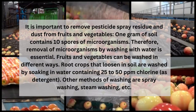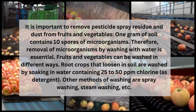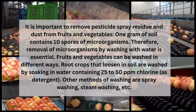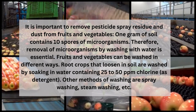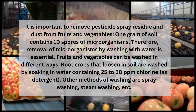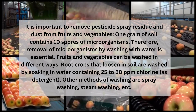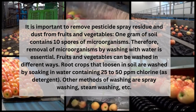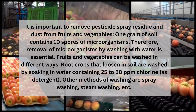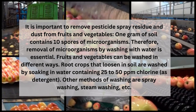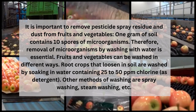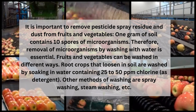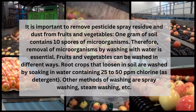Washing: It is important to remove pesticide residue and dust from fruits and vegetables. One gram of soil contains 10 to 12 spores of microorganisms. Therefore, removal of microorganisms by washing with water is essential. Fruits and vegetables can be washed in different ways. Root crops that loosen soil are washed by soaking in water containing 25-50 ppm chlorine.